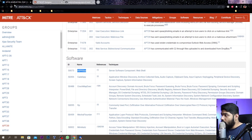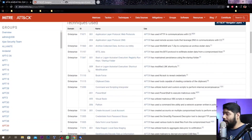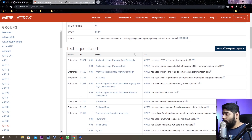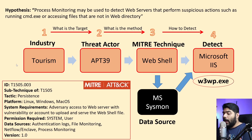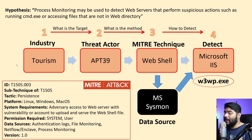They have used aspx and other software, and are known heavily for utilizing application layer protocols and web protocols to exploit targets. Now, what exactly are we trying to do? We will assume there is a Microsoft IIS server running that has a vulnerability, and that particular vulnerability has been exploited by the attacker to get into the network.